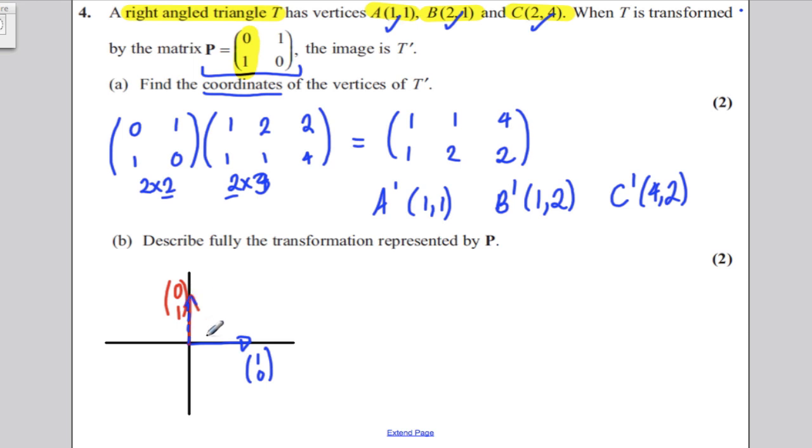And the second column tells me where 0, 1 goes, and it goes to 1, 0, which is down here. Now, what transformation swaps these around? Well, the only one that I can think of is the reflection in the line Y equals X. So, the transformation is a reflection in line Y is equal to X.